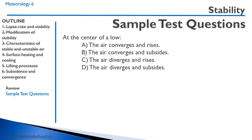At the center of a low, the air wants to go from high pressure to low pressure, so from the surrounding regions it converges towards the low. When it has nowhere to go at the center, it's forced to rise. So the correct answer is A.